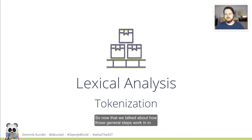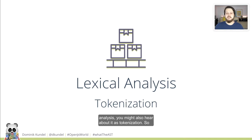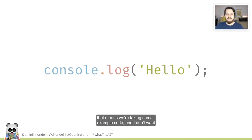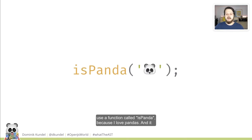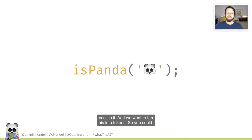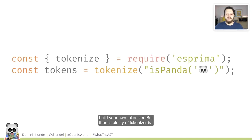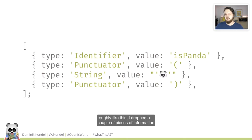Now that we talked about how those general steps work, let's dive into each step in more detail. The first step is lexical analysis — you might also hear it called tokenization. We take some example code — and I don't want to use the classic hello world, so instead I'm going to use a function called isPanda, because I love pandas. It receives one argument, in this case a string with a panda emoji. We want to turn this into tokens. You could build your own tokenizer, but there are plenty of tokenizers for JavaScript. I'm going to use esprima and call tokenize on that, which will give us a list of tokens, roughly like this — I dropped some information like line numbers to fit it on the slide.